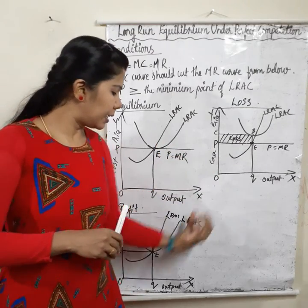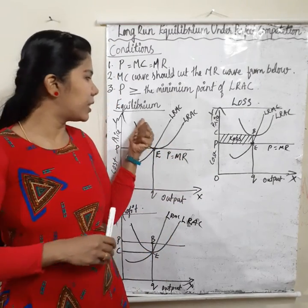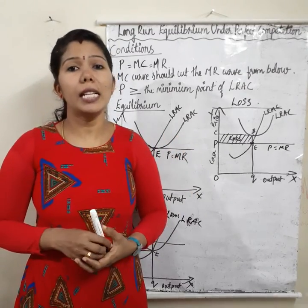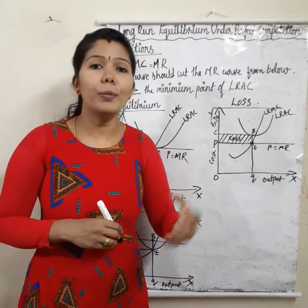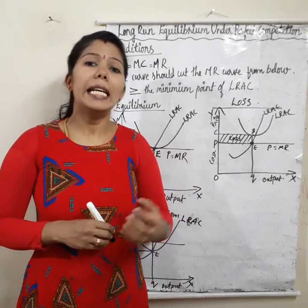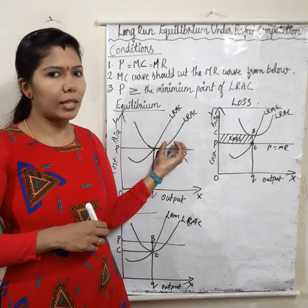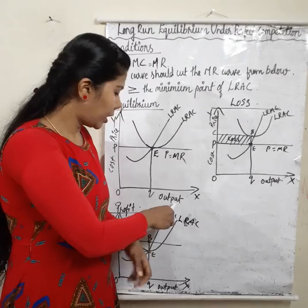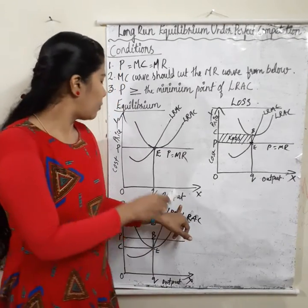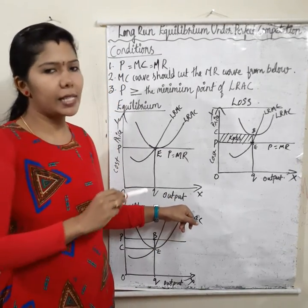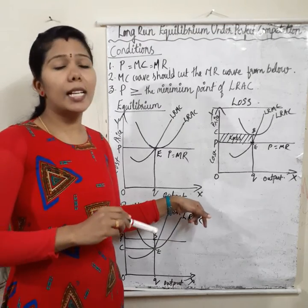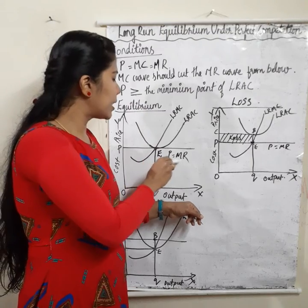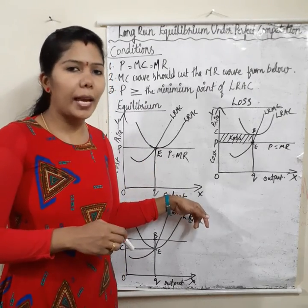Now we can explain the diagrams. In this first diagram, we can learn how the firm is attaining equilibrium under perfect competition in the long run. In this diagram, the x-axis represents output and the y-axis represents cost and price. There are three curves: the first curve is P equals MR, which is the price line equal to MR.